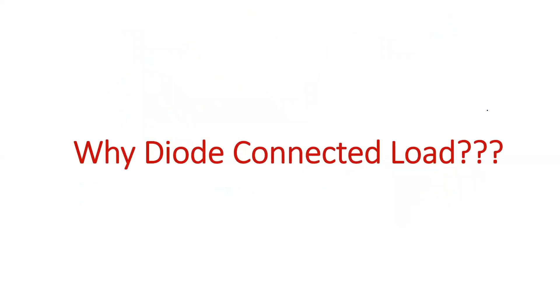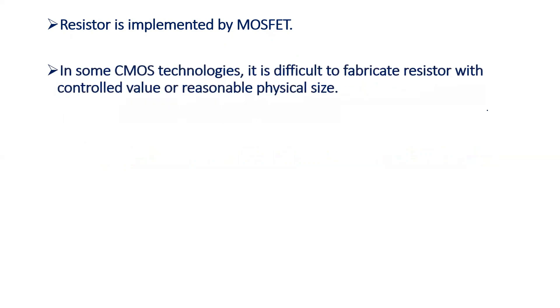Why diode connected load? Why are we connecting diode connected load instead of Rd? First point: the resistor is implemented by the MOSFET. In the case of a diode connected transistor, we are implementing that resistor Rd using the MOSFET. Second point: in some CMOS technologies, it is difficult to fabricate a resistor with a controlled value or reasonable physical size. The physical size and value of resistors are somewhat uncontrollable in CMOS technologies, so we can use a MOSFET instead of a physical resistor.